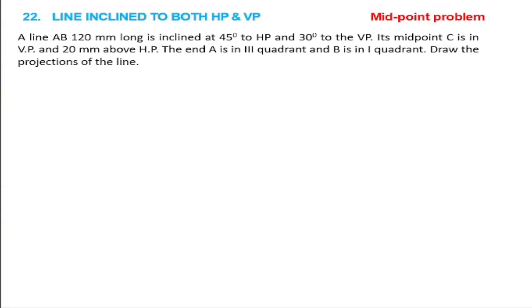This is problem number 22. The heading is a midpoint problem. Line AB is 120mm long, inclined at 45 degrees.